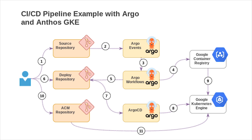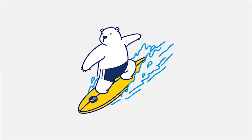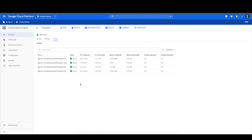Argo Workflows is then going to commit to a new branch in our deploy repository, altering the image tag, and then issuing a pull request for approval. Once we approve that pull request, Argo CD is going to pick up that change and roll out the new version of our application to the cluster. Now, let me show you the demo.